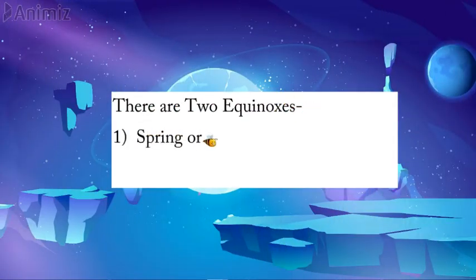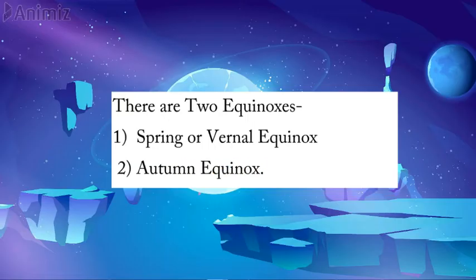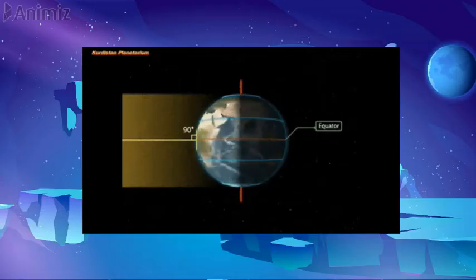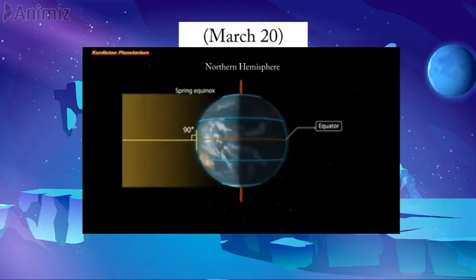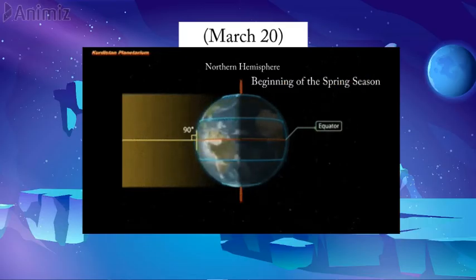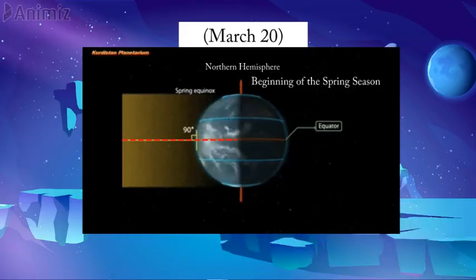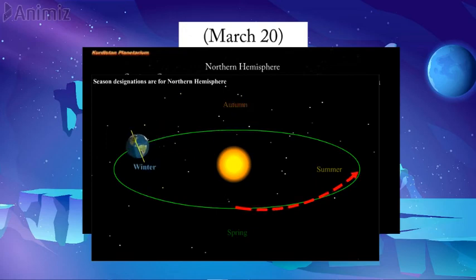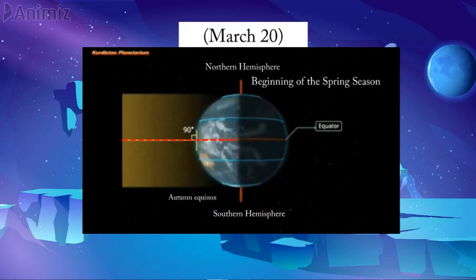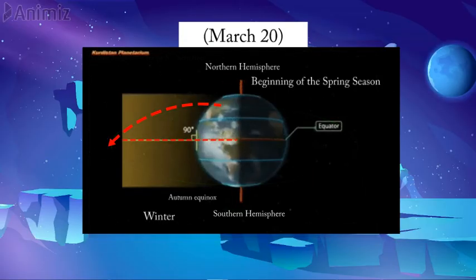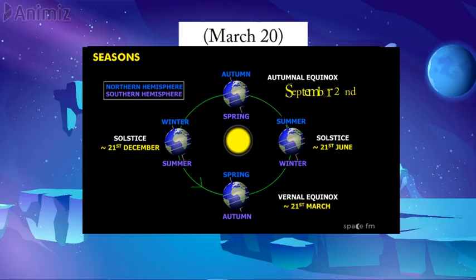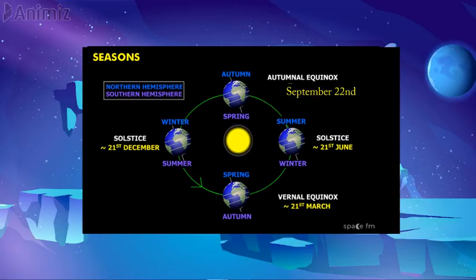There are two equinoxes: spring or vernal equinox and autumn equinox. Spring or vernal equinox occurs around March 20th in the northern hemisphere, marking the beginning of the spring season. On this day, sun rays fall directly on the equator and there is equal day and night all over the world, followed by summer. At the same time, the southern hemisphere experiences autumn equinox, followed by winter season. Autumn equinox occurs around September 22nd in the northern hemisphere, followed by winter, while the southern hemisphere experiences spring equinox, followed by summer season.